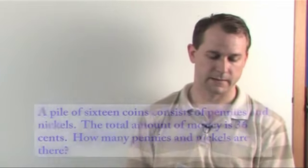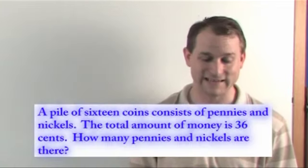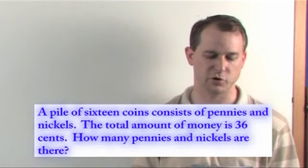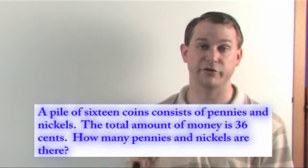Next problem. A pile of 16 coins consists of pennies and nickels. So all you have is pennies and nickels in this problem. We have 16 coins. The total amount of money is 36 cents.